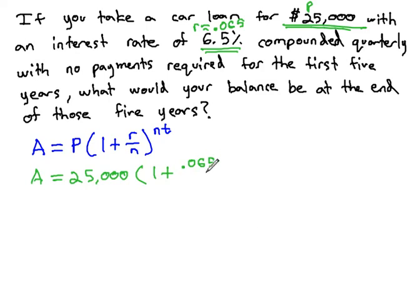.065 over n, which is the number of compounds in a year, and this one's compounded quarterly. So how many quarters do we have in a year? There are four quarters in a year, just like there's four dollars in a year.